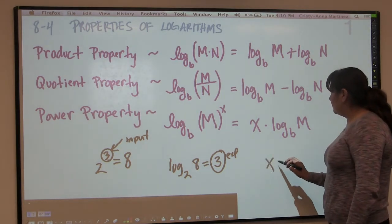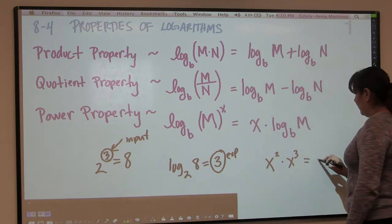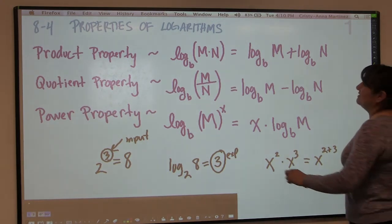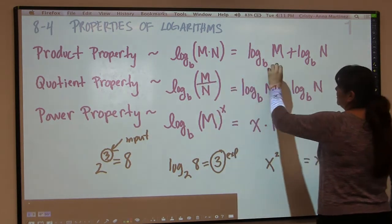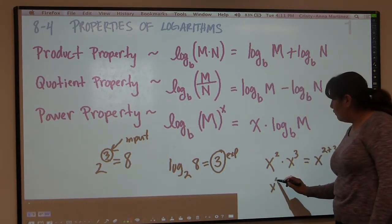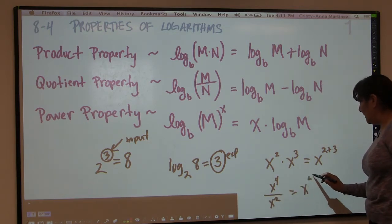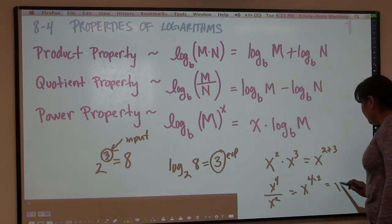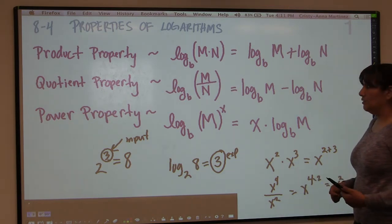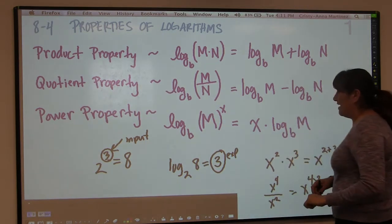When you have x squared times x cubed, you add the exponents and get x to the fifth. So it makes sense that when we're multiplying, we split that into addition. When you divide exponents, like x to the fourth over x squared, you get x to the 4 minus 2, which is x squared. The property for exponents with division is that you subtract the exponents, so with a log of a quotient you separate it into subtraction.